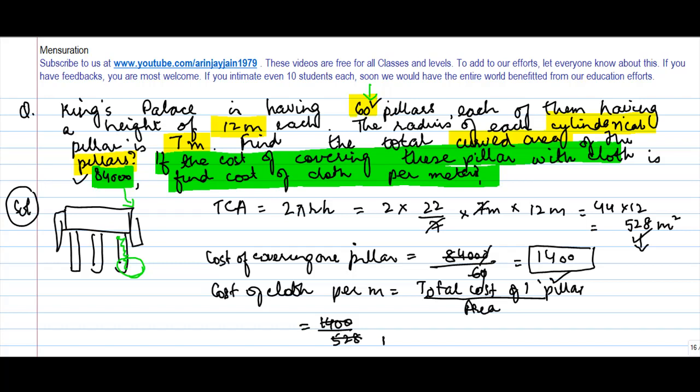When you do the division, you will get 175/66. This simplifies to approximately 243/16, which is the cost per meter of the cloth.